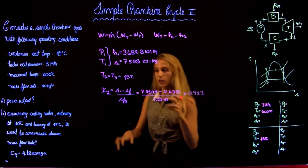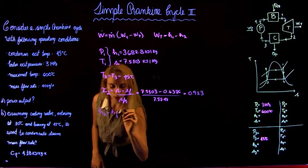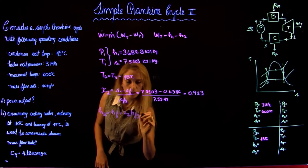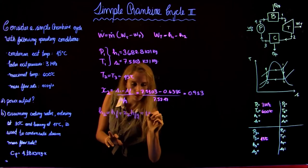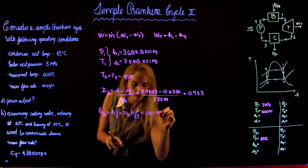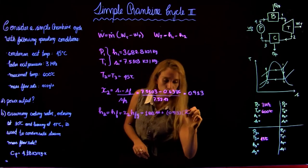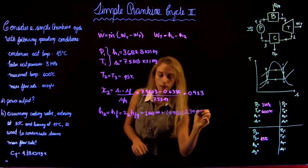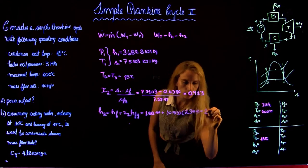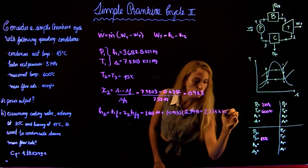Having the quality, we can find the enthalpy at state 2 using the table values. H2 = 1188.44 + (0.913 × 2394), which equals an enthalpy at state 2 of 2374.16 kJ/kg.